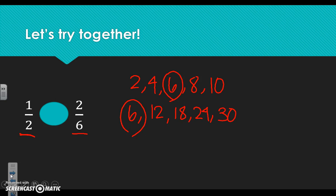Now here's what's important. We're going to take each of our fractions, starting with one half. We need to multiply to make sure our bottom number can get to six — the multiple they have in common. Two times what gives me six? Two times three gives me six. But whatever I do to the bottom, I have to do to the top, so I'm going to multiply both the denominator and the numerator by three.